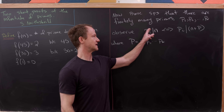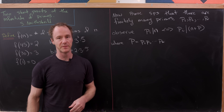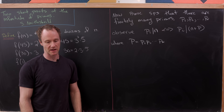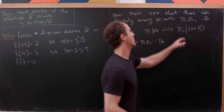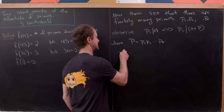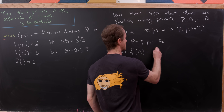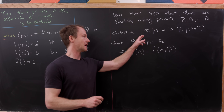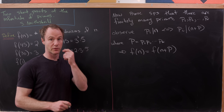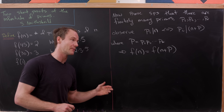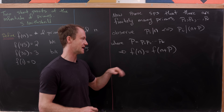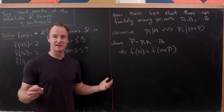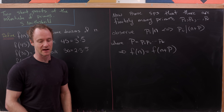So n is a multiple of pᵢ if and only if n + P is a multiple of pᵢ. This equivalence means f(n) = f(n + P): the number of primes dividing n must equal the number of primes dividing n + P. In fact, it's not just the same count — it's exactly the same set of primes.